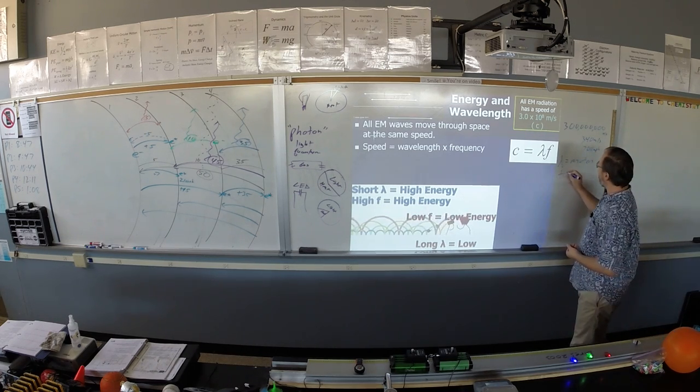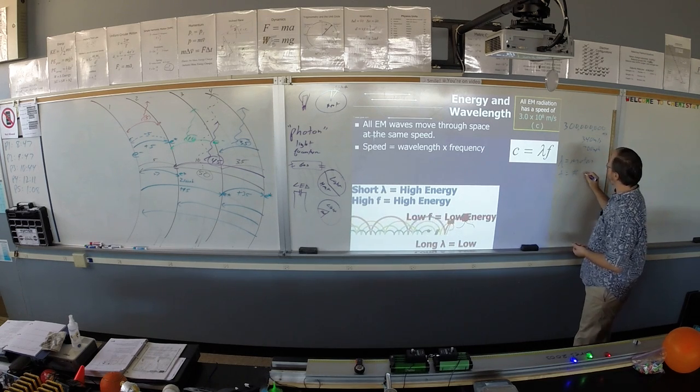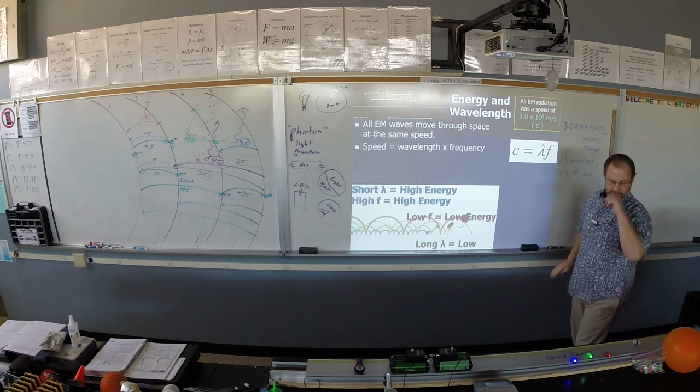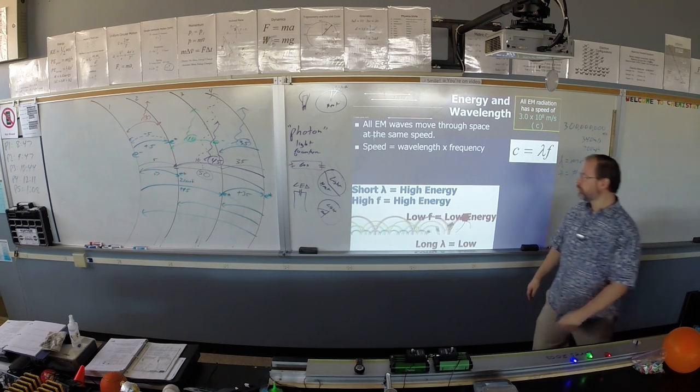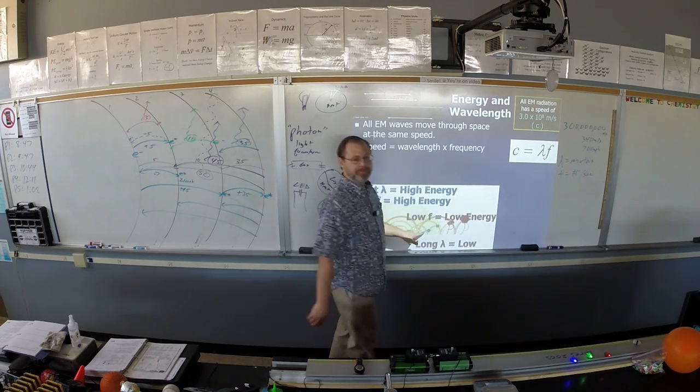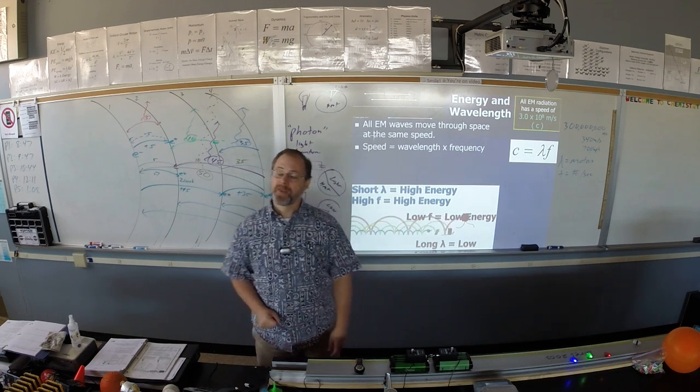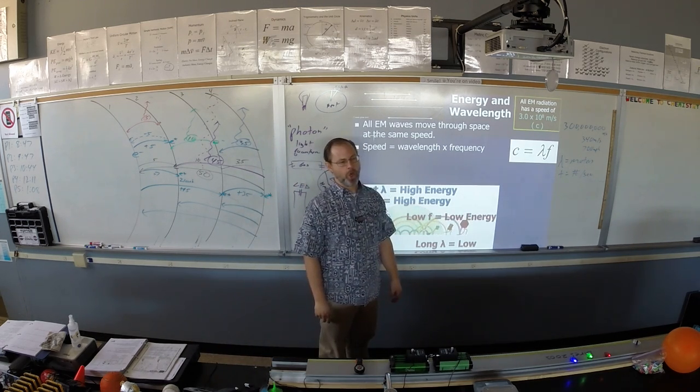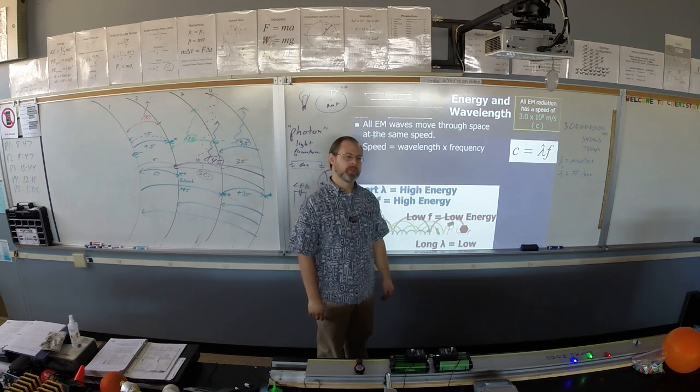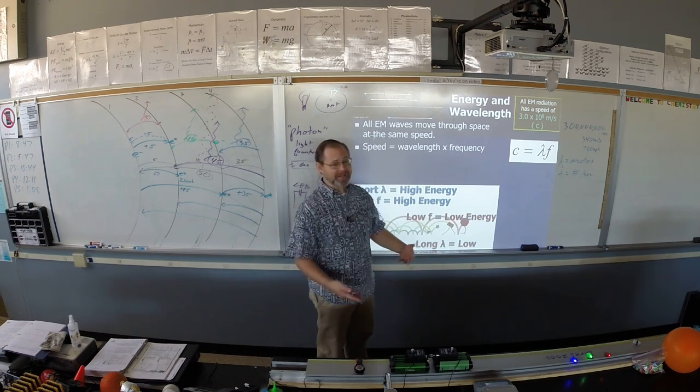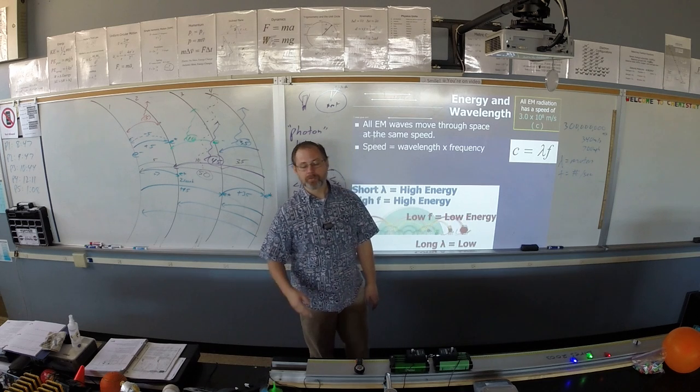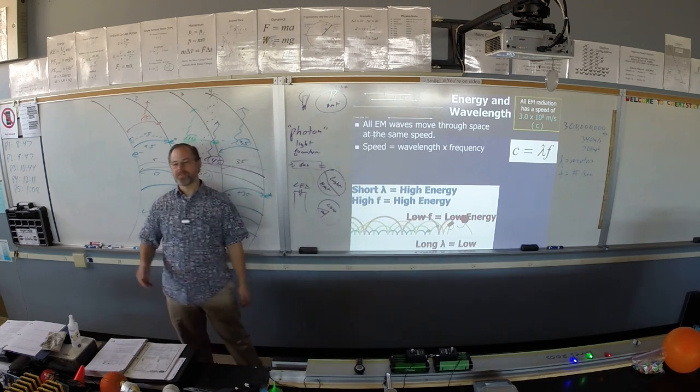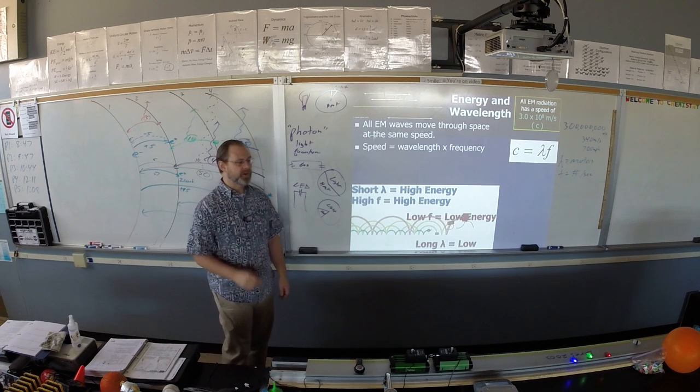Frequency is how many you get, the number you get per second. The number of bounces you get per second. So you might notice that the blue wave has a very high frequency, but a very small wavelength. And the red wave has a really low frequency, but a really long wavelength. And that's how light works. Light of larger wavelengths has very low frequencies. Lights of tiny wavelengths have very high frequencies.